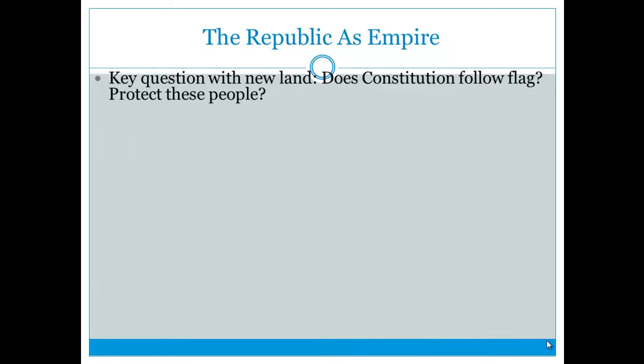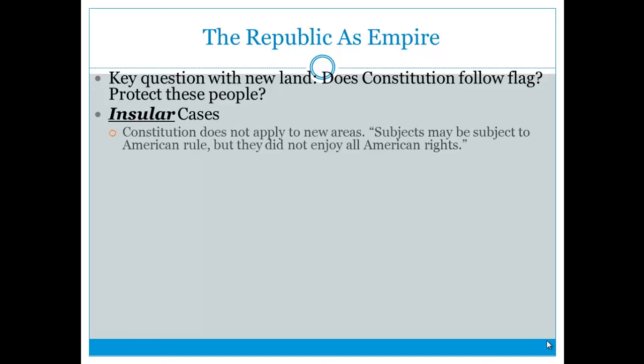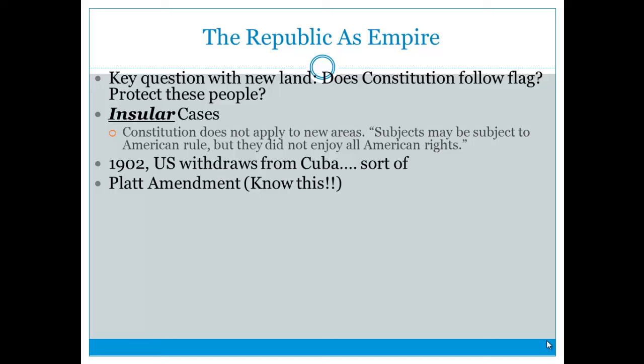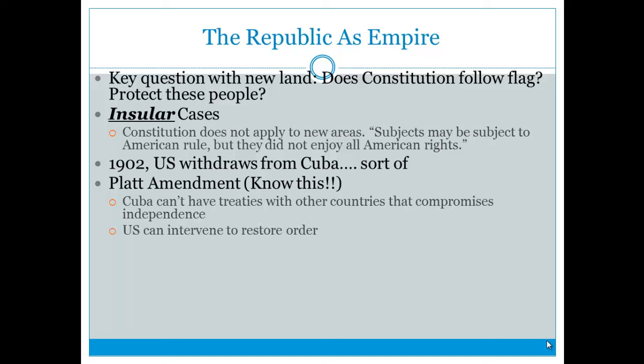A key question arose: does the Constitution follow the flag? In the Insular Cases, the Supreme Court said the Constitution does not necessarily apply to new territories — subjects could be under American rule without enjoying all American rights. In 1902, the U.S. withdrew from Cuba through the Platt Amendment, which stated Cuba can't make treaties compromising its independence against U.S. wishes, the U.S. can intervene to restore order, and Guantanamo Bay is given to the United States — which is why the U.S. still has it today.